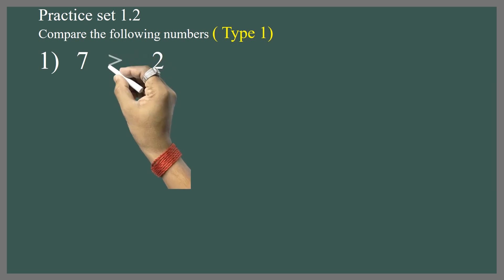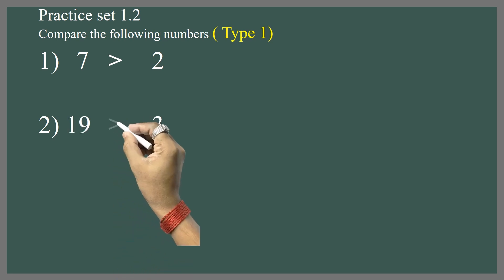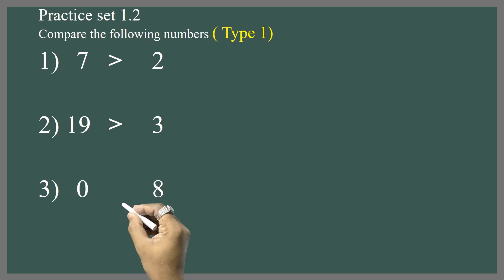Obvious, 7 mohta hoed. Second one, 19 and 3. 19 is greater than 3. Another example, 0 and 8. Once again, 8 is greater.